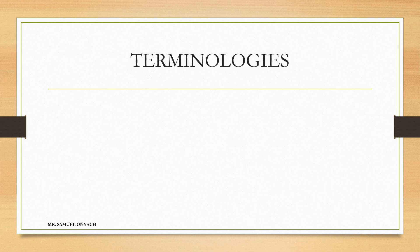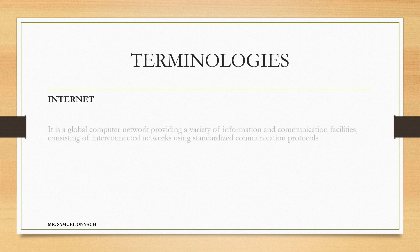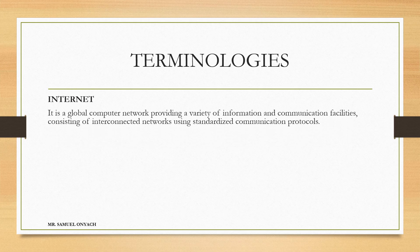To begin with, we introduce ourselves to certain terminologies that are commonly used in this unit. The first one is internet. What do we mean by internet? It is a global computer network providing a variety of information and communication facilities, consisting of interconnected networks using standardized communication protocols.